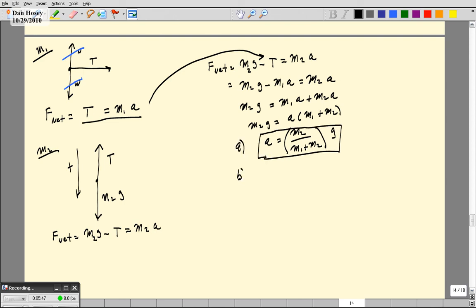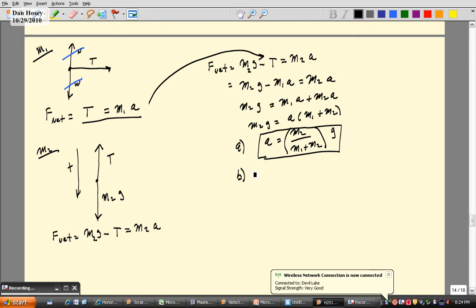For part B, we're just going to plug into this equation acceleration over here, the T equals M1A. So the A from over here, when I write T equals M1A and I plug in, that's going to be the same as M1 times M2 over M1 plus M2 times G. So we've answered that.